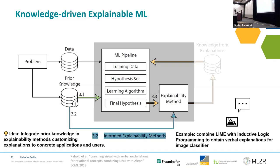For the informed explainability method, the idea is that you integrate knowledge into the explainability method to cater towards user needs, providing a customizing component. One example from the literature combined LIME, a post-hoc explainability method, with inductive logic programming to obtain verbalizations of an image — deriving rules and giving verbal explanations of images.